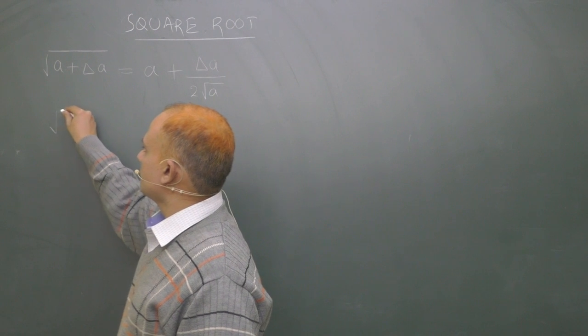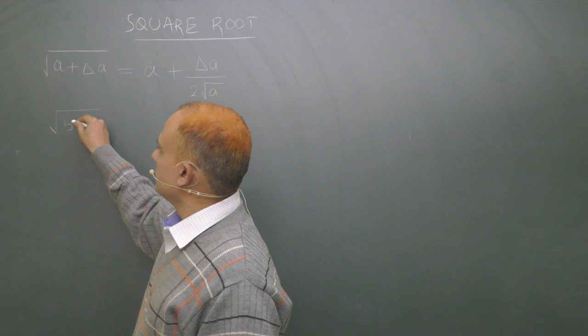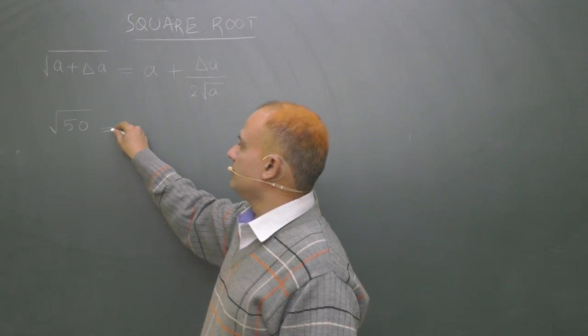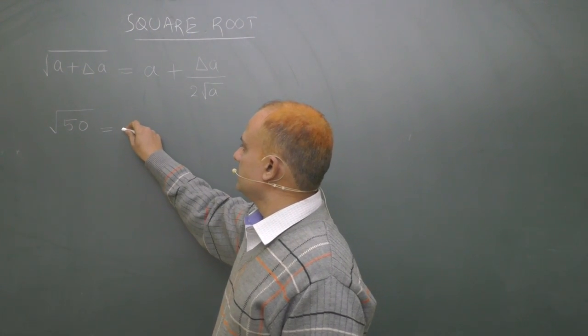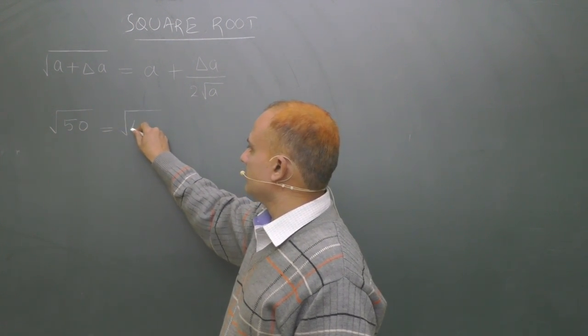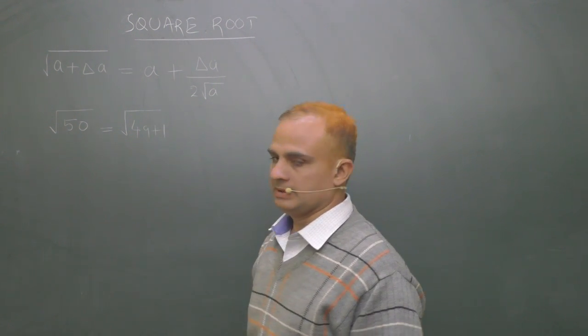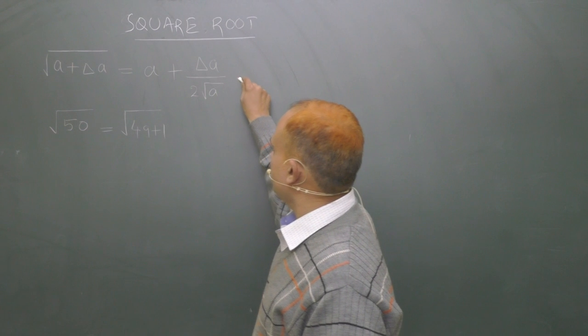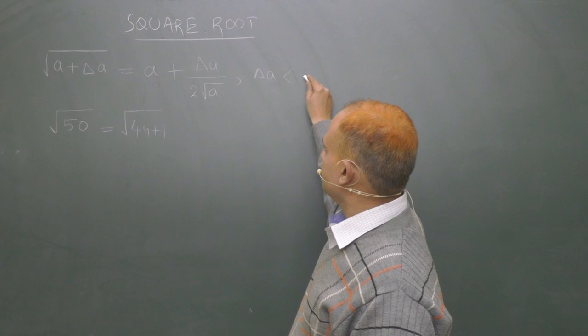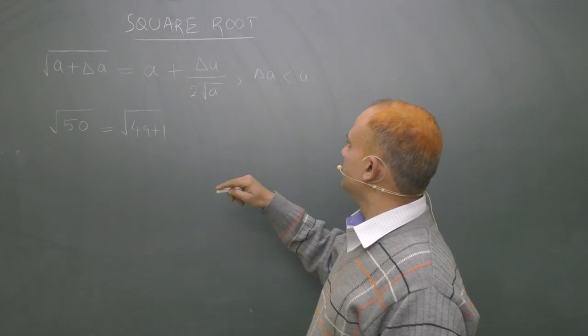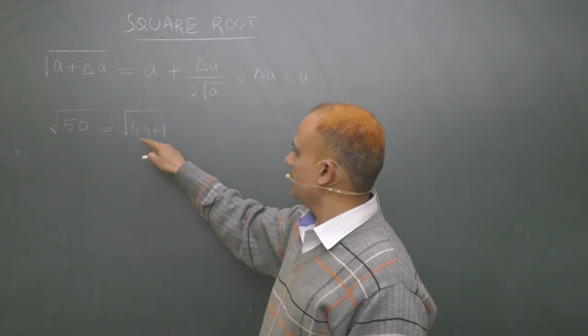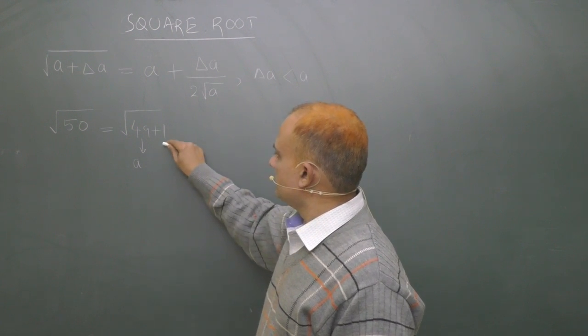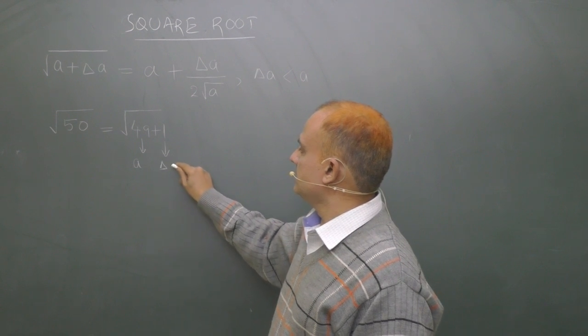Suppose you wish to find square root of 50. But do you know square root of 50? No. But you know square root of a number which is very close to this is 49. So split this 50 into two parts: 49 plus 1. And see this delta a. Delta a should be less than a. This delta a should not be bigger than a. So here delta a is 1, a is 49. So I am writing 49 as a and 1 as delta a.